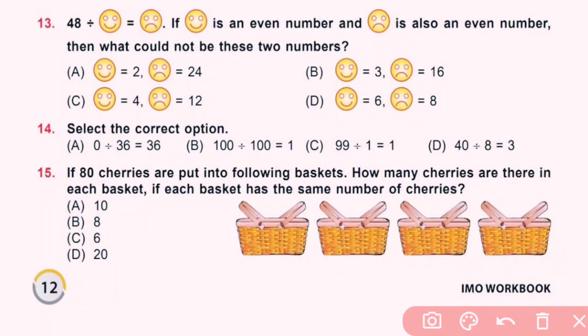Question number 13: 48 divided by smiley face equals sad face. If smiley face is an even number and sad face is also an even number, then what could not be these two numbers? Here option A, both are even numbers, and 48 divided by 2 equals 24. In option B, 3 is odd number and 16 is even number. So B could not be these two numbers. So here B is correct answer.